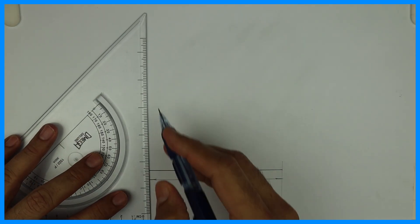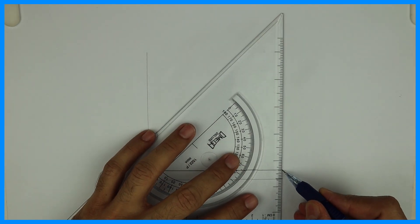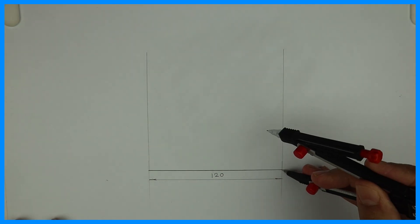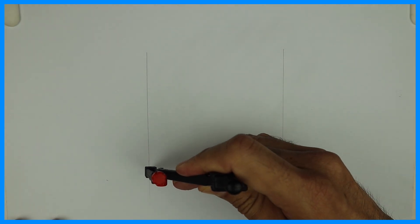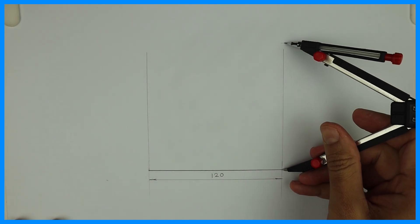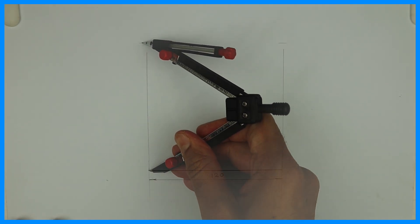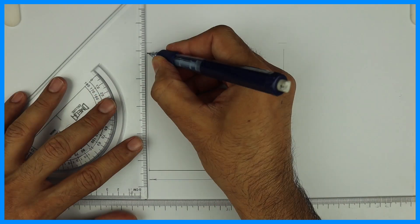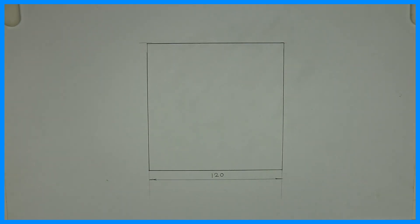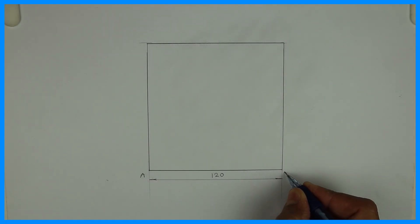Then draw a vertical line from A as well as B, perpendicular, and we can draw a square. We'll take the side as 120 and cut it over here. So we have square ABCD.